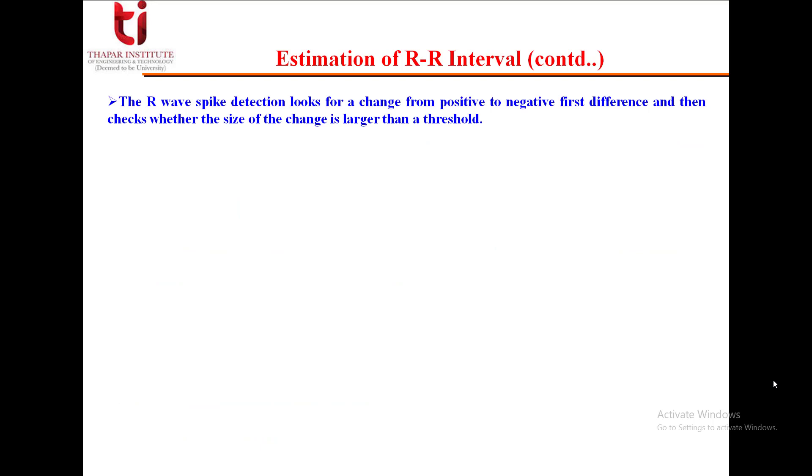The R-wave spike detection looks for a change from positive to negative first difference and then checks whether the size of the change is larger than a particular threshold. If both these conditions are satisfied, then the point at which the change has occurred is marked as an R peak.